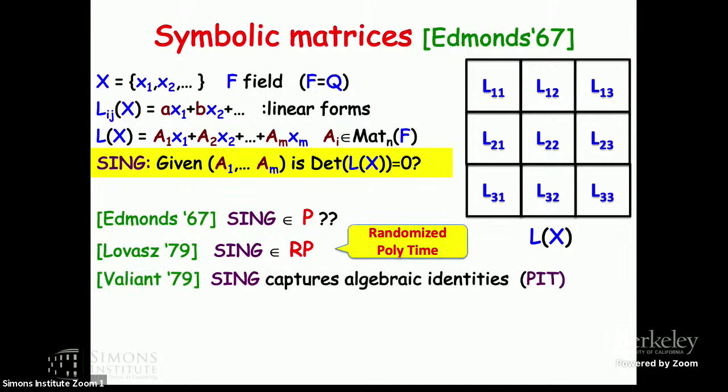Why is this problem so essential? Valiant, in his theory of algebraic complexity, discovered that this problem captures all algebraic identities. If you ever wondered why you see so many symbolic determinants all over mathematics — they capture formulas. Any algebraic identity can be formulated as a question of whether a symbolic determinant is zero. It's a complete problem for a natural complexity class.